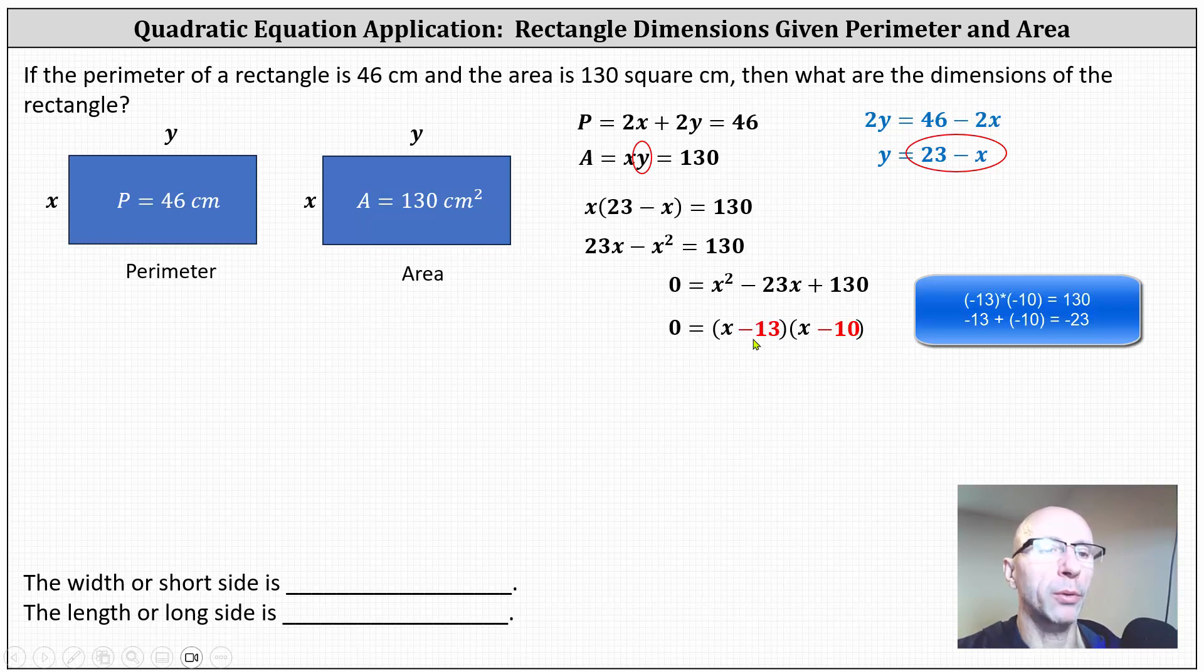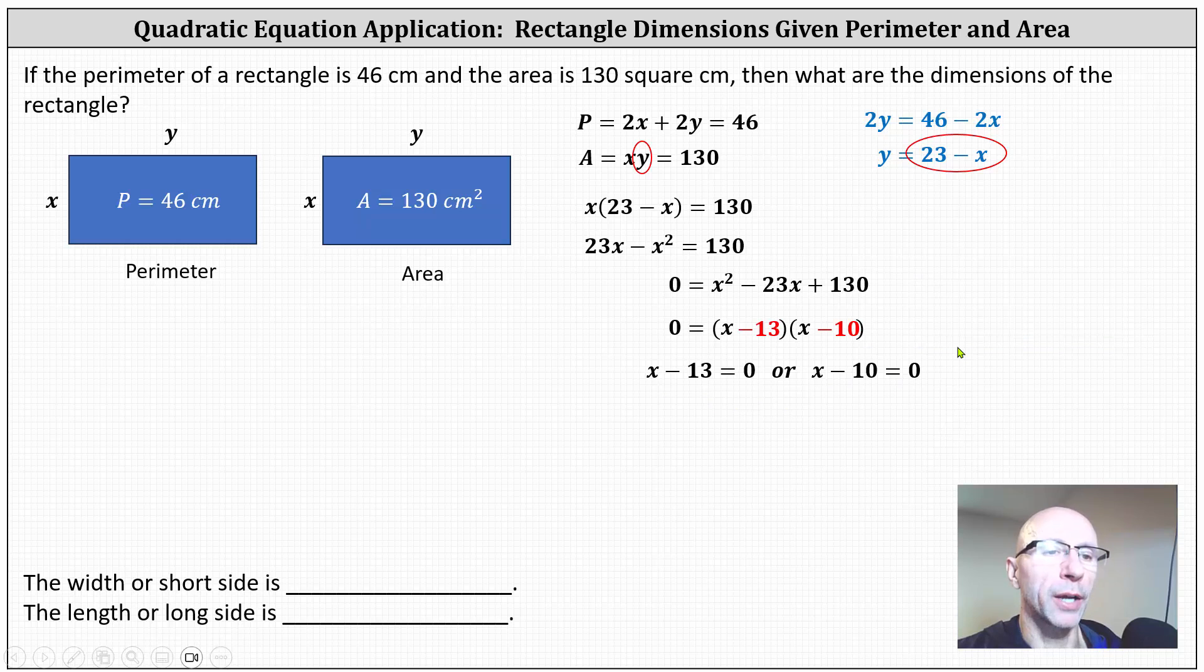From here, the product on the right is equal to 0 when x minus 13 equals 0 or x minus 10 equals 0. And now we solve these two equations for x, which gives us x equals 13 or x equals 10.